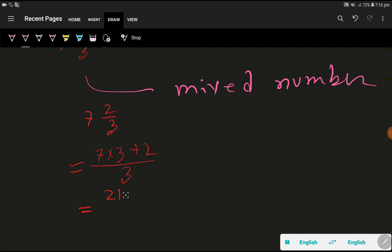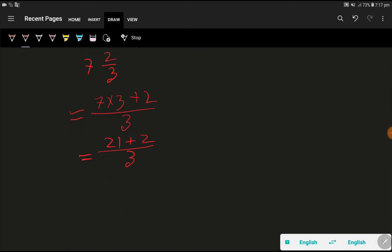Then we have here 2, then here we have 3. So look, if I add 21 plus 2, that gives me 23 divided by 3.